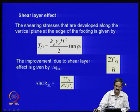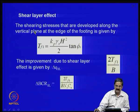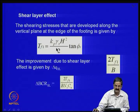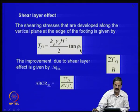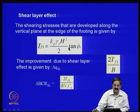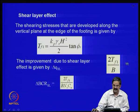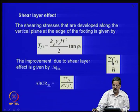For the shear layer effect, the shearing resistance developed along the vertical plane at the edge of the footing is given by K_p × gamma × H, so the force is K_p × gamma × H² / 2 × tan(phi_s), because we need the vertical component. The improvement due to shear layer effect — delta Q_SL — is 2 × T_f1 divided by B, giving the result per meter length. The bearing capacity ratio improvement is this value divided by N_c × C_u.